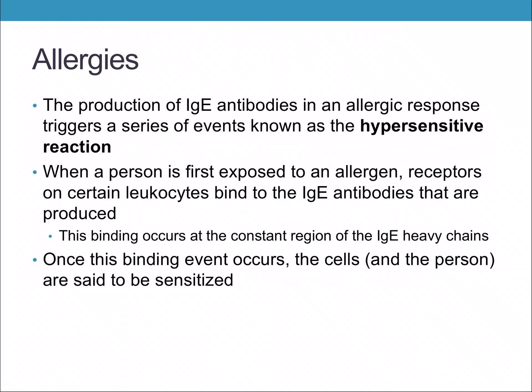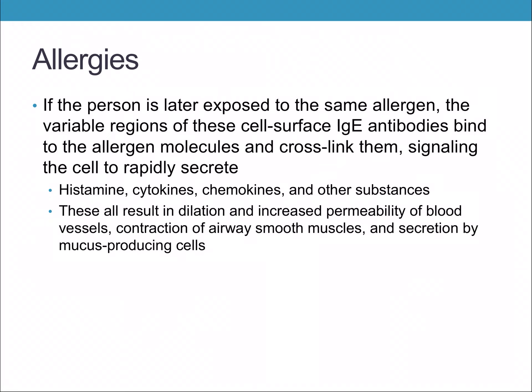This binding occurs to the constant region of the IgE heavy chains, and once it occurs the cells and the person are said to be sensitized. If the person is later exposed to the same allergen, the variable regions of these cell-surface antibodies bind to the allergen molecules, cross-link them, signaling the cell to rapidly secrete histamines, cytokines, chemokines, and other substances. This causes dilation of blood vessels, contraction of your airways, and over-production of mucus — which can be very dangerous.